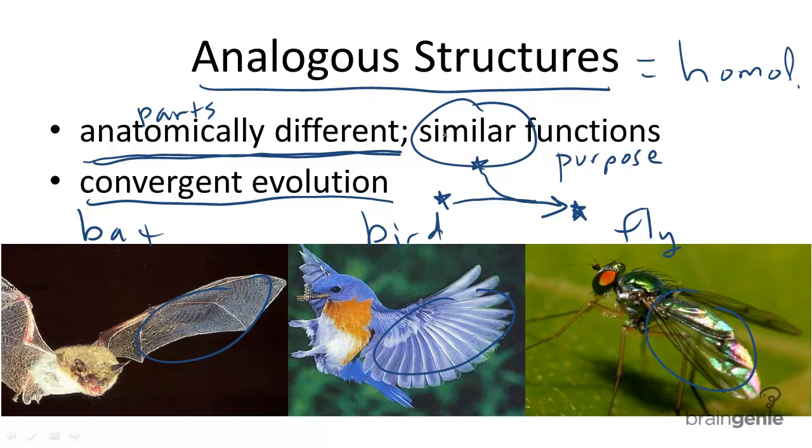However, analogous structures have similar purpose. They all fly, or they all use these structures to walk, or for the immune system, or what not. And in homologous structures, they have different purposes.